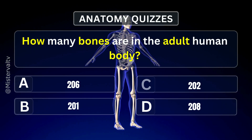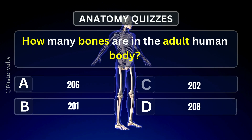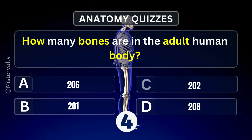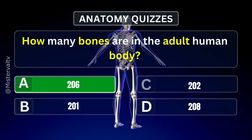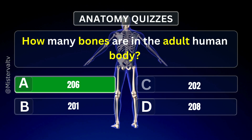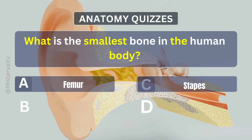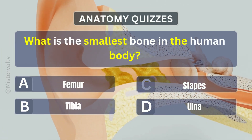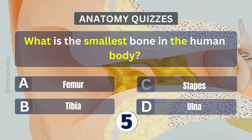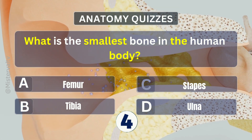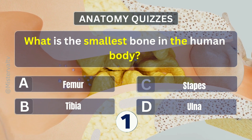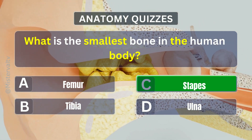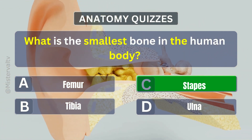How many bones are in the adult human body? Answer. A. 206. What is the smallest bone in the human body? Answer. C. Stapes.